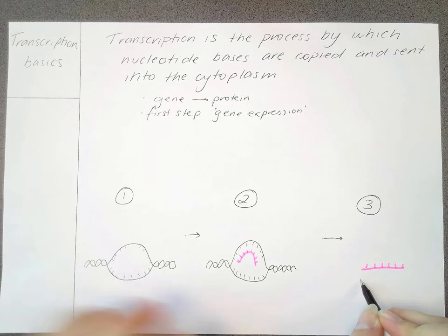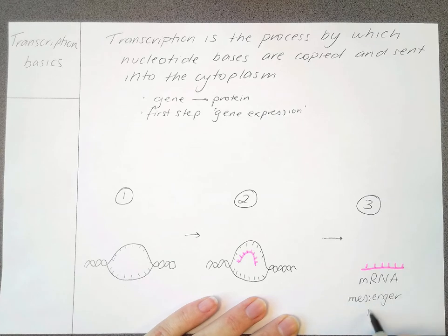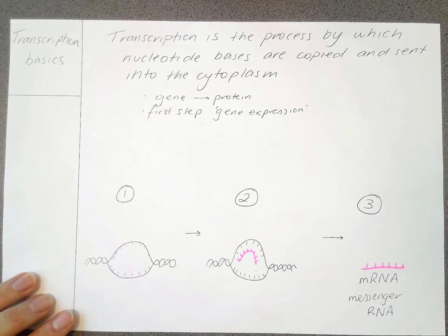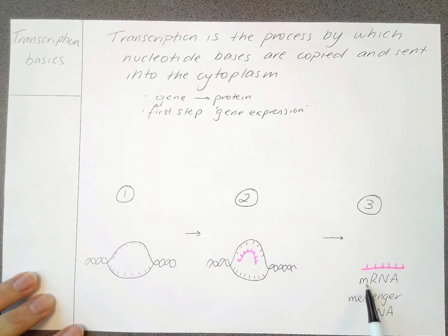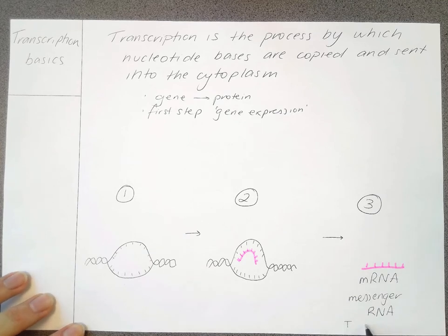So this here is considered mRNA or messenger RNA. We will also have tRNA or transport RNA, which we'll get to later on, but this is the important part here, the mRNA. It is a single strand and remember the difference is that it is single strand and it also does not have a thymine. It has a U for uracil instead.